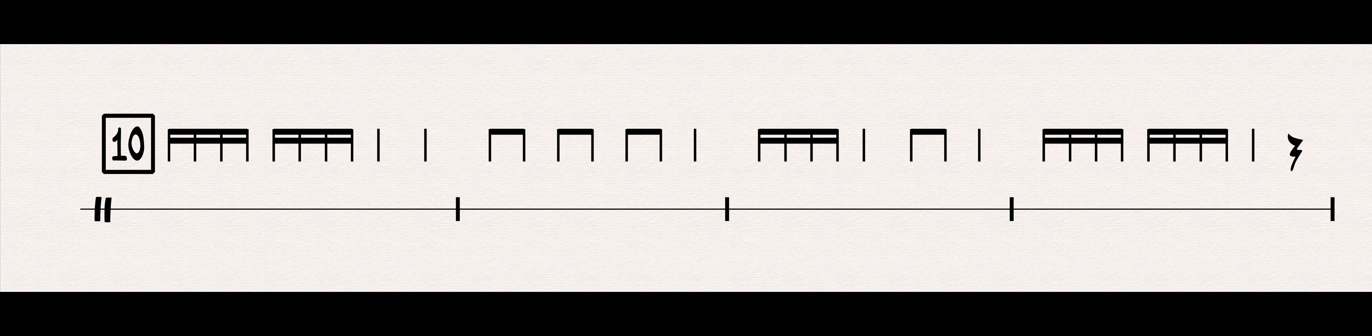So one thing I want to mention is when we have two sets of four in a row like we do in the beginning here, there is no break between this first group of four and the second group of four. So it is not takadimi, hmm, takadimi, hmm, ta.